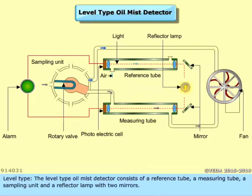The Level Type Oil Mist Detector consists of a reference tube, a measuring tube, a sampling unit, and a reflector lamp with two mirrors.